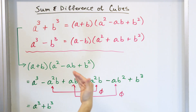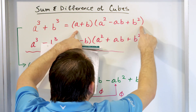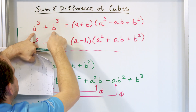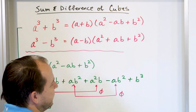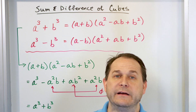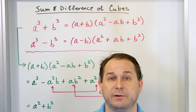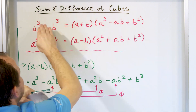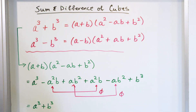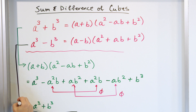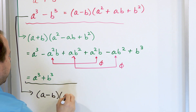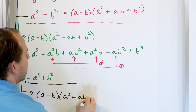So we've proved it by going backwards: we took the right-hand side, multiplied it out, and showed it equals the left-hand side. Anytime you see two cubed terms added together, you can write the factored form directly. Now for the second formula: A minus B times A squared plus AB plus B squared should give us A cubed minus B cubed.